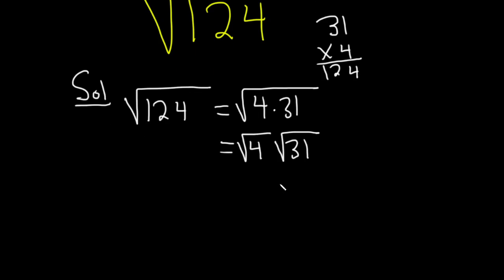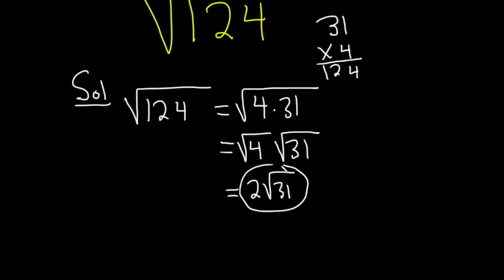The square root of 4 is 2, and the square root of 31 is simply the square root of 31. That's pretty much it — you can't really do anything else. We've simplified the square root of 124. I hope this video has been helpful. Good luck.